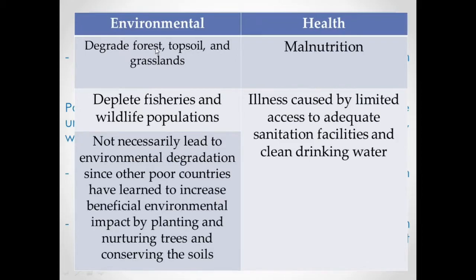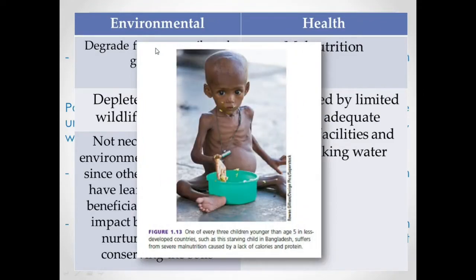So short-term survival leads to negative environmental impacts, while long-term survival can increase beneficial environmental impacts. For health effects, environmental degradation can have severe consequences for poor people. One life-threatening problem is malnutrition, especially in countries like Bangladesh and other poor nations where children under age five are starving and suffering from severe malnutrition.